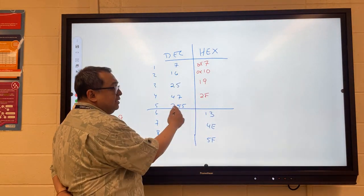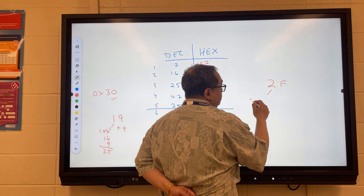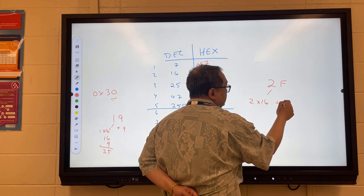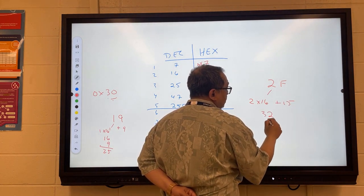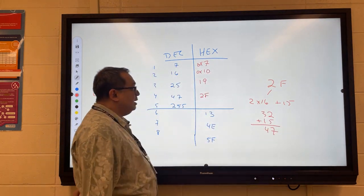Now if you're not sure that this makes sense, let's take 2F apart. So this is going to be 2 times 16 plus 15. So that's 32 plus 15 is 47. You see that, right?